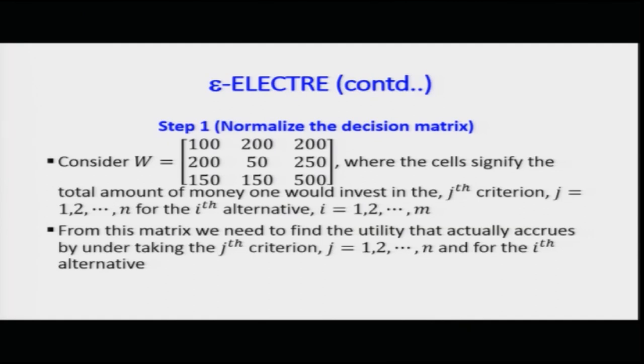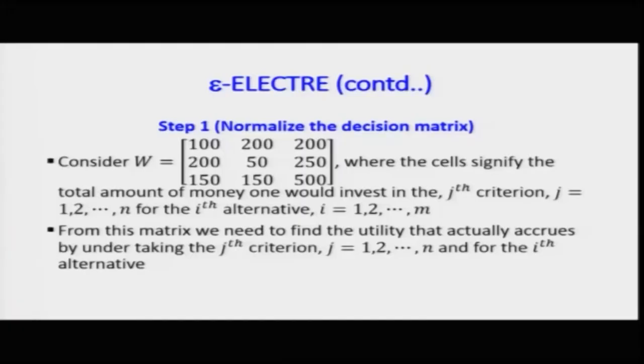Consider the overall matrix W — where W represents wealth, not weights (small bold w would be weights). The wealth values accrued for any particular decision, reading along the rows, are: row 1: 100, 200, 200; row 2: 200, 50, 250; row 3: 150, 150, 500. These values without units represent the total amount of money invested in the j-th criterion based on each decision.